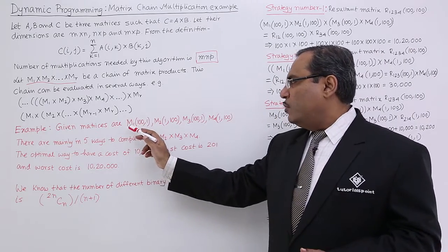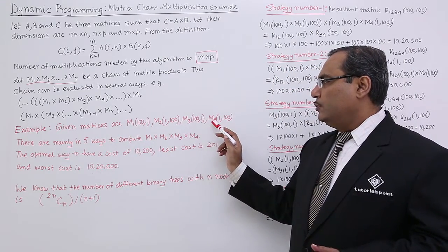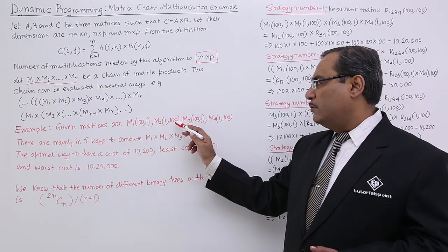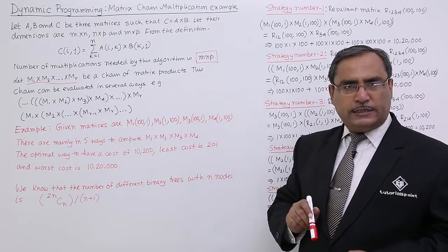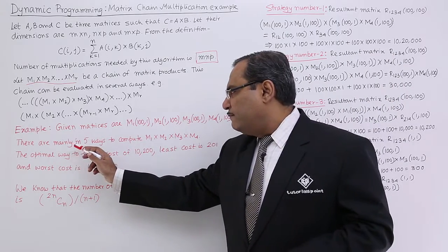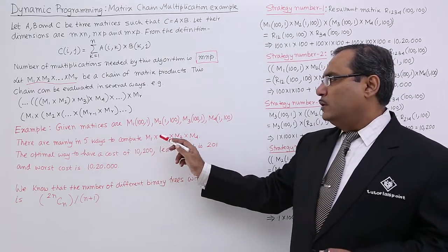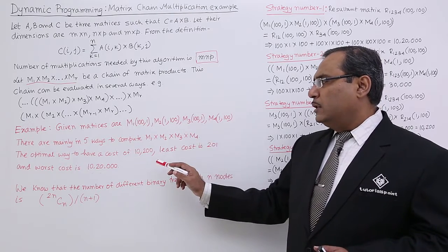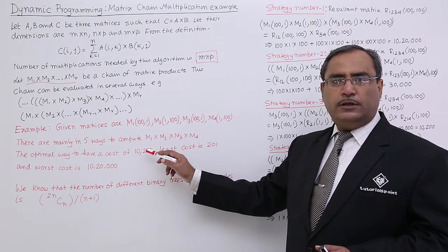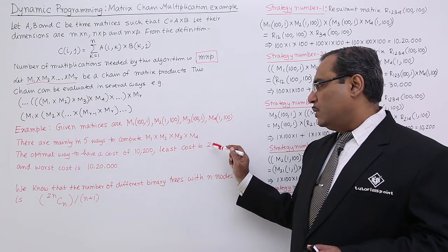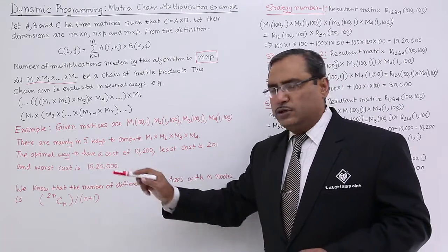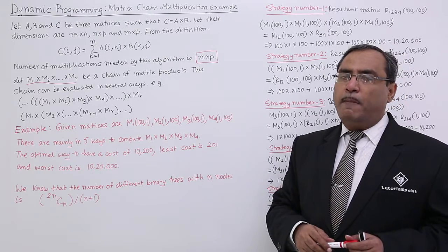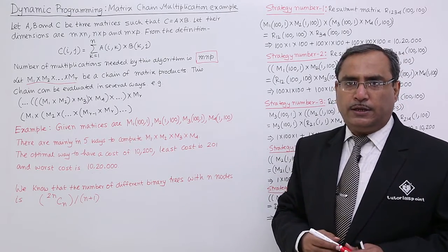The given matrices are M1, M2, M3, M4 having sizes 100×1, 1×100, 100×1, and 1×100 respectively. There are mainly 5 ways to compute M1 into M2 into M3 into M4. The optimal cost will be 10,200, the least cost will be 201, and the worst cost will be 1,020,000. Cost means the number of multiplications, i.e., the complexity.